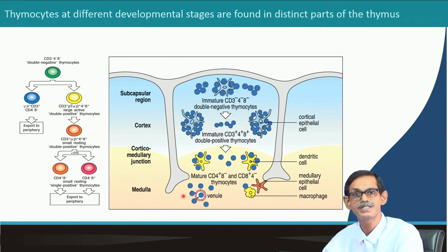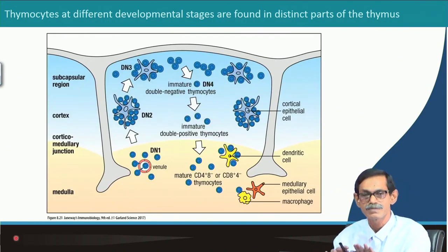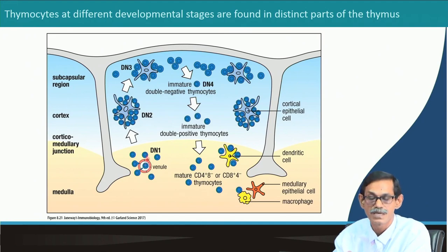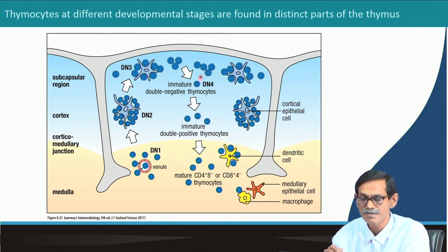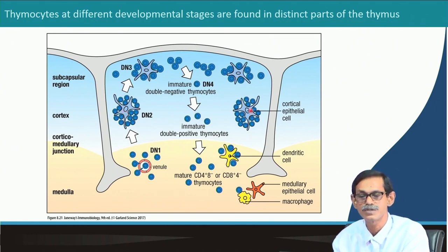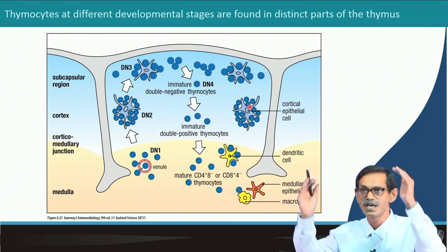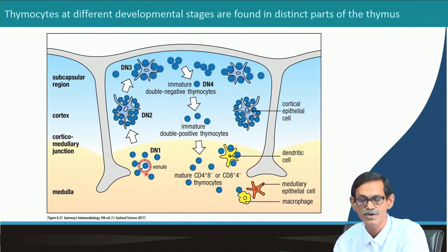Looking in more detail at the double negative cells: they enter from the venule as DN1, then progress to DN2, DN3, DN4. The DN4 stage becomes immature double positive. Combining both slides, we can understand how immature thymocytes mature within each thymus lobule. It is not one-sided — DN2 occurs on both sides, progressing from double negative to double positive to single positive, after which cells exit to the periphery.